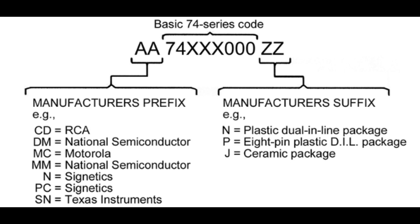Talking about the numbering system again — there can be extra numbers on the package, both in front and in the back. The front numbers can signify who made it, whether it was Signetics, Texas Instruments, or Motorola. The back numbers will often tell you what type of package it is — plastic, ceramic, and so on. There's a lot more to the numbering system than just the 74 part.